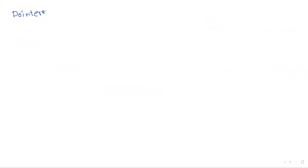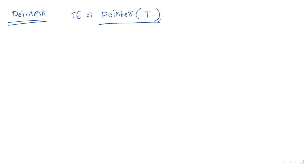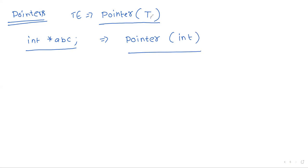For pointers, the type expression is written as pointer(T), where T is the data type. For example, if the declaration is int* abc, the type expression is pointer(int). That means T is the data type — if this statement is given, the type expression is written in this format.